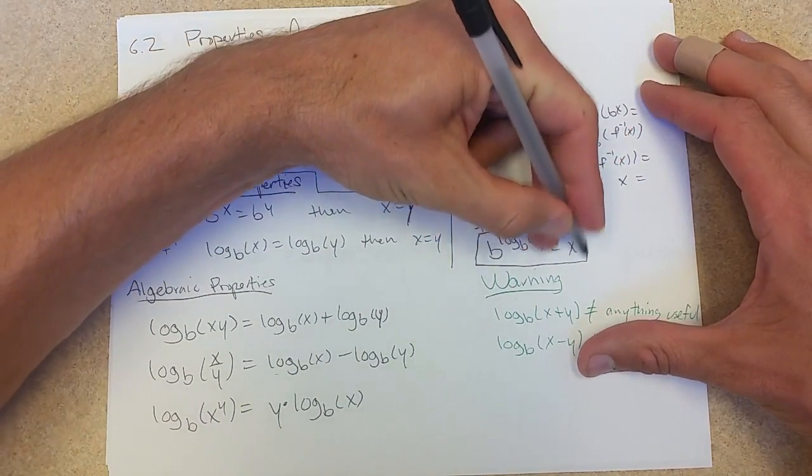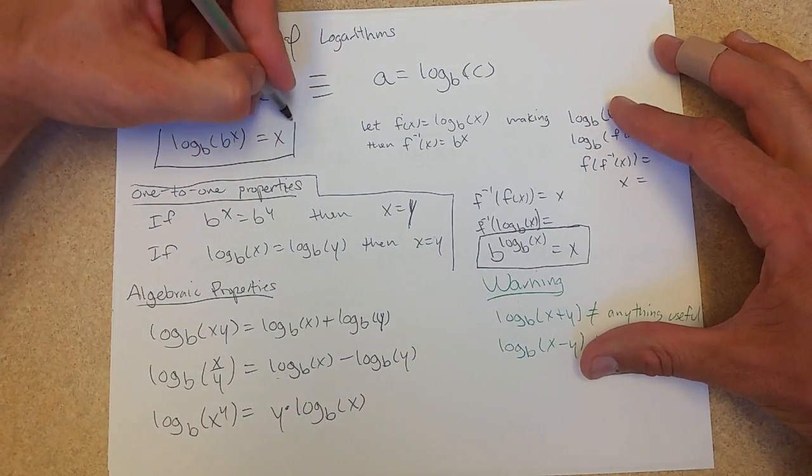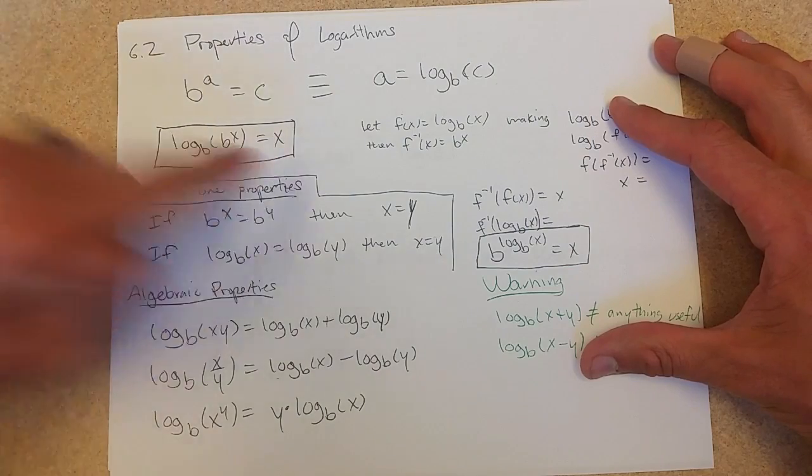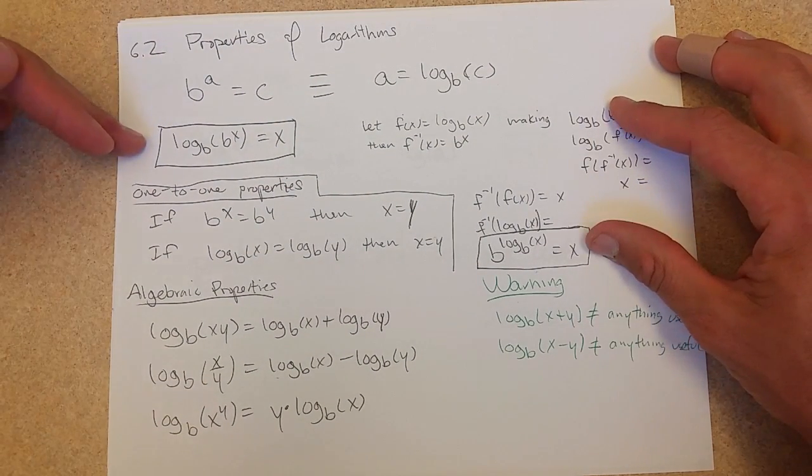So here's another property. You can compose them this direction, canceling out to x. Or this direction, canceling out to x. So there's two cancellation properties.